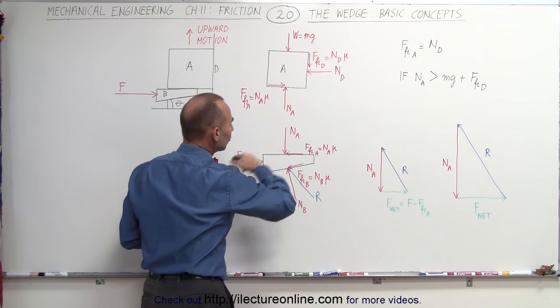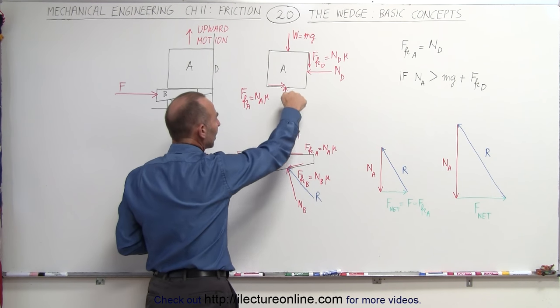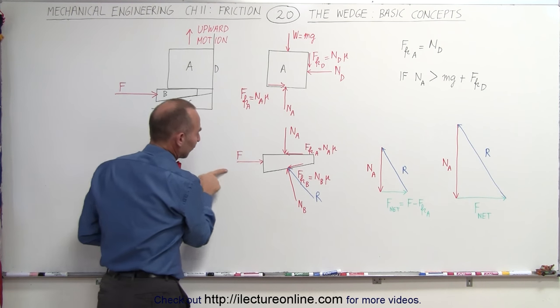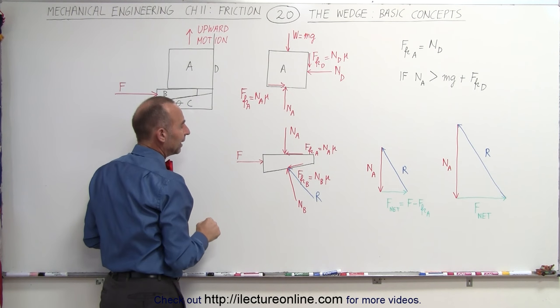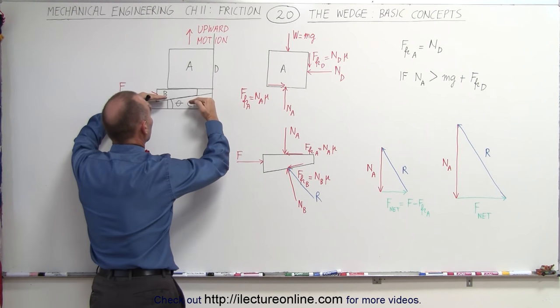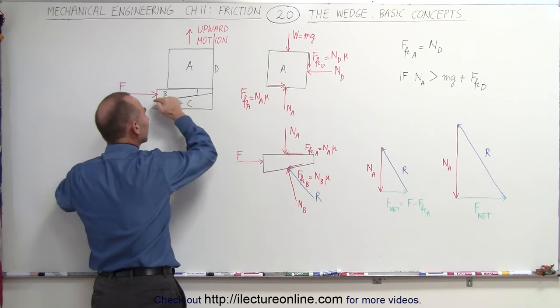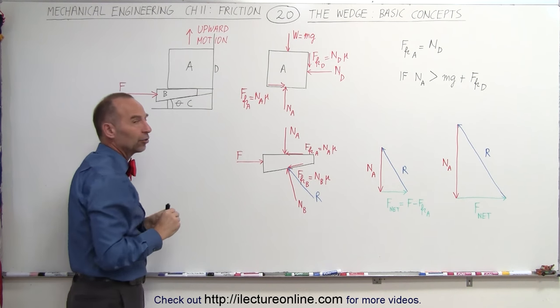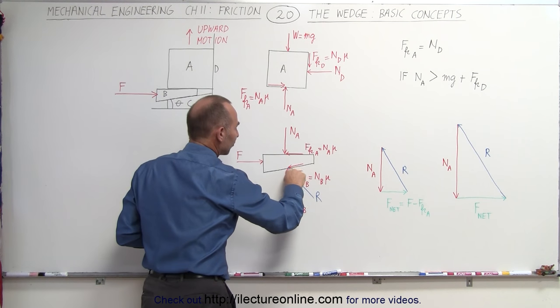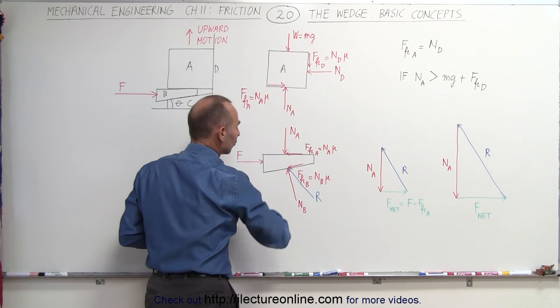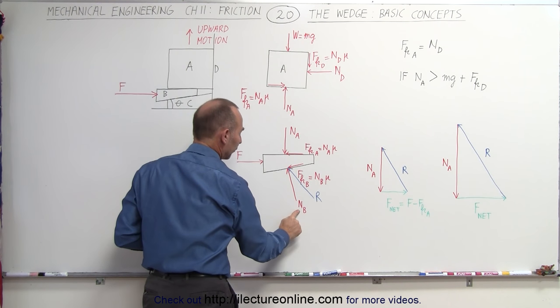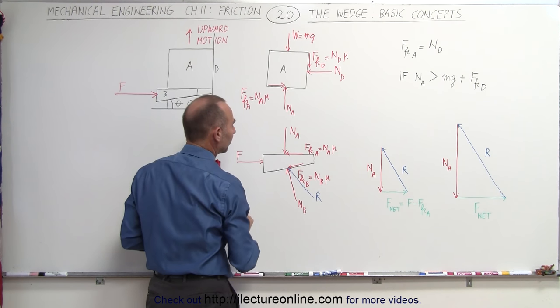If we look at the forces on the wedge here, notice we have N sub A also acting downward to the top surface of the wedge. We have the force trying to drive the wedge in, and we have a normal force at the surface B here. Notice the normal force is slanted, and we have an angle here relative to the horizontal. Typically, those angles are fairly small. Notice there will also be a friction force at B against the wedge, and so there will be a resultant force, which is the vector sum of these two forces, the normal force at B and the friction force at B.